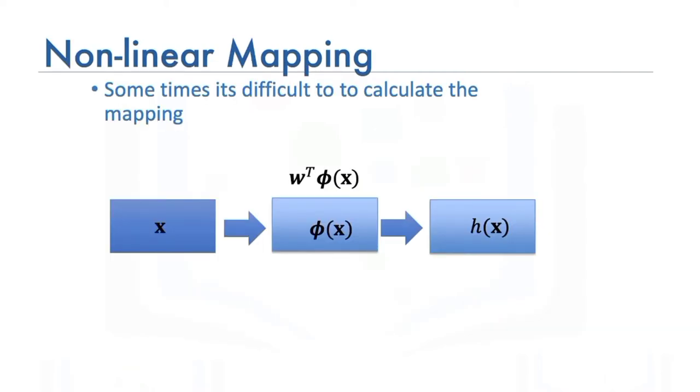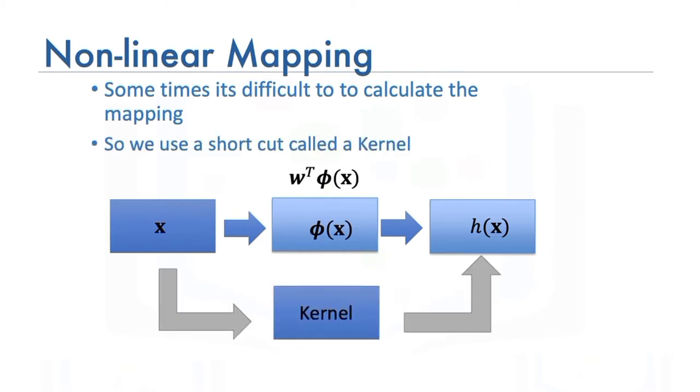Sometimes it's difficult to calculate the mapping. We use a shortcut called a kernel. There are different types, such as linear, polynomial, radial basis function, or RBF. The RBF is most widely used. Each of these functions has its own characteristics, its pros and cons.